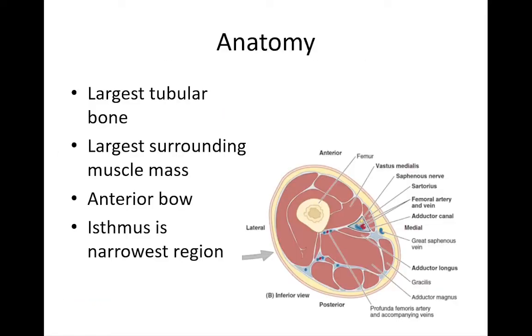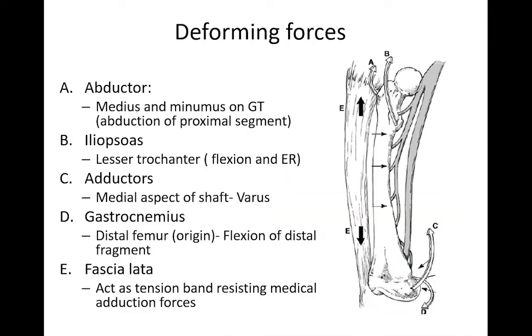To start with the anatomy, the femur is the largest tubular bone in the body and it has the largest surrounding muscle mass. There is an anterior bow and the isthmus is the narrowest region in the bone.